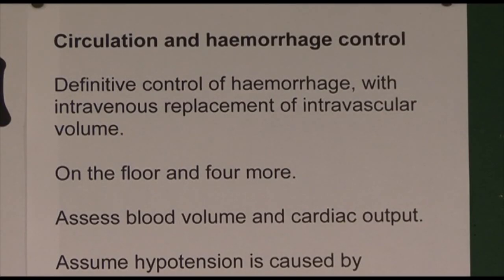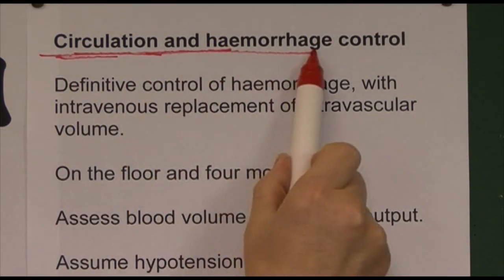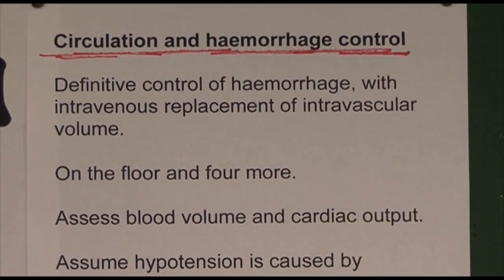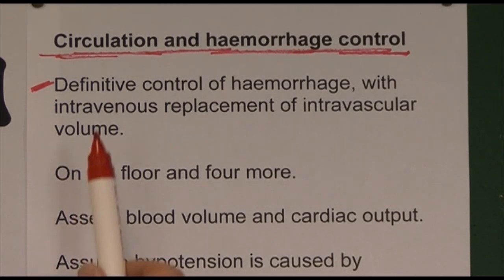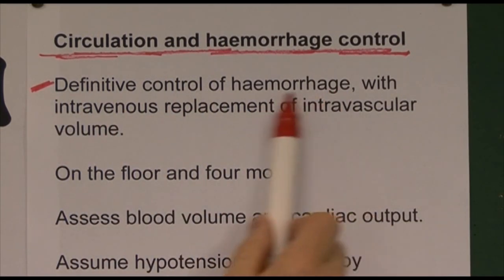So: A for airway with cervical spine protection, B for breathing and ventilation, C for circulation and haemorrhage control. Our next priority, and the first thing to say, is completely obvious — fix the leak. Stop the blood coming out: definitive haemorrhage control. You might need to apply direct pressure, apply artery clips and ligate bleeding vessels, or arrange emergency pre-operative care — for example a splenectomy if the spleen is bleeding. Whatever it is, you have to stop the leak.